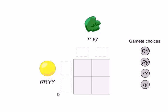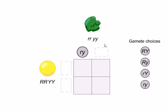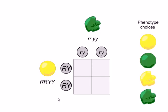One parent is homozygous dominant and the other is homozygous recessive. The gametes produced are all combinations of one allele from each gene. The recessive parent produces only small r, small y gametes. The dominant parent produces only caps R, caps Y gametes — so caps R caps Y is placed on both sides.